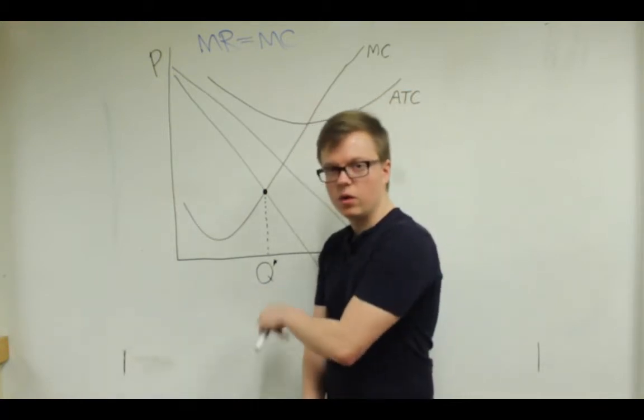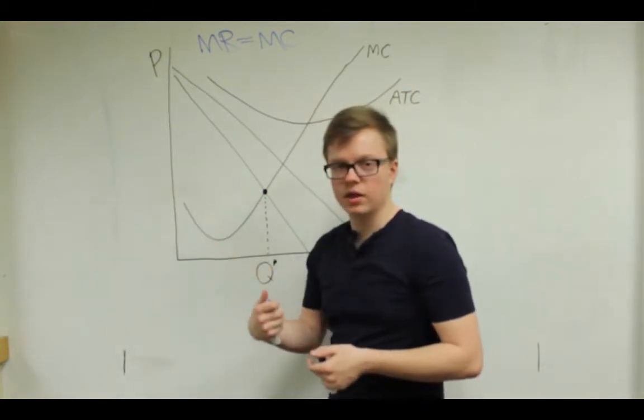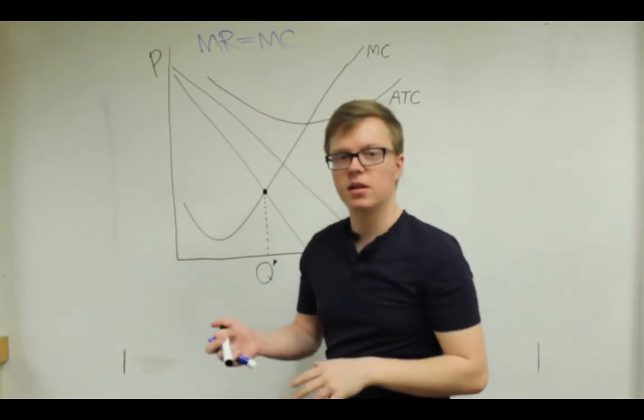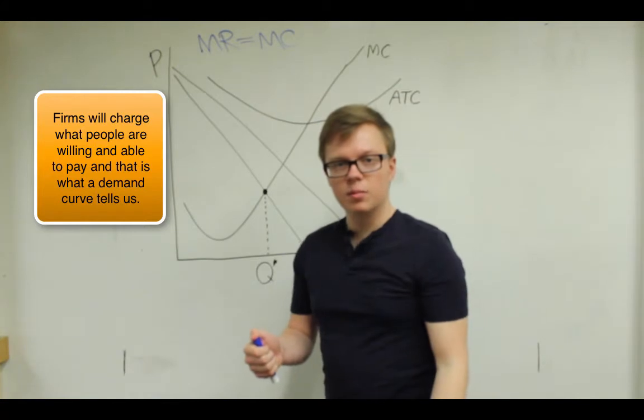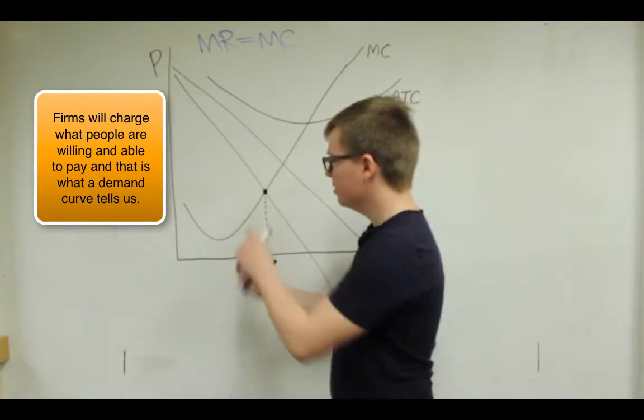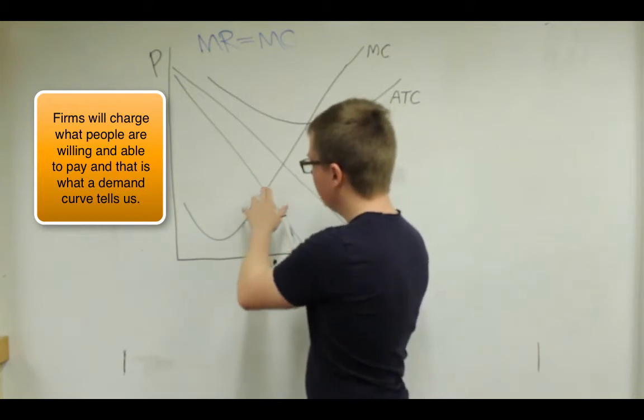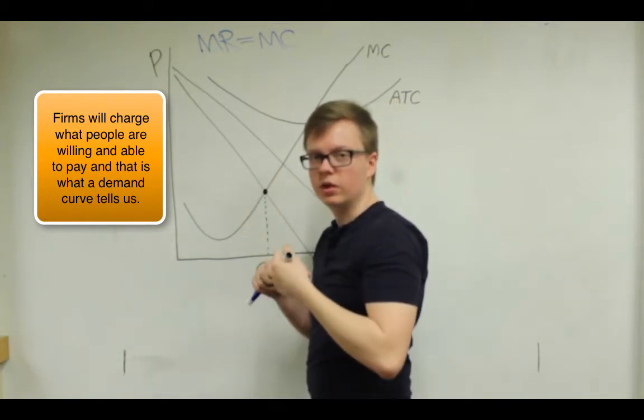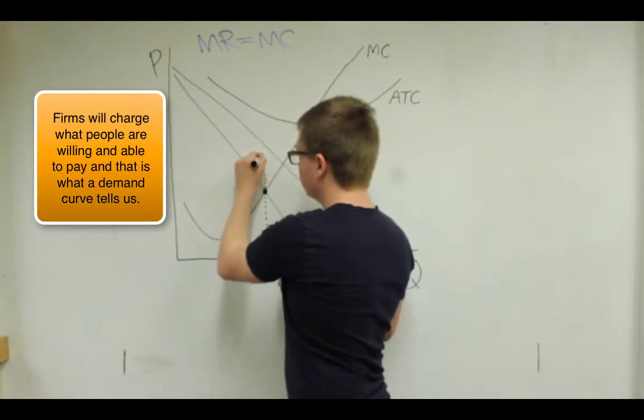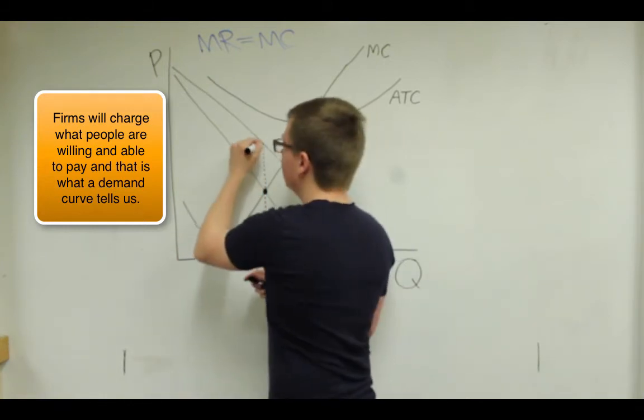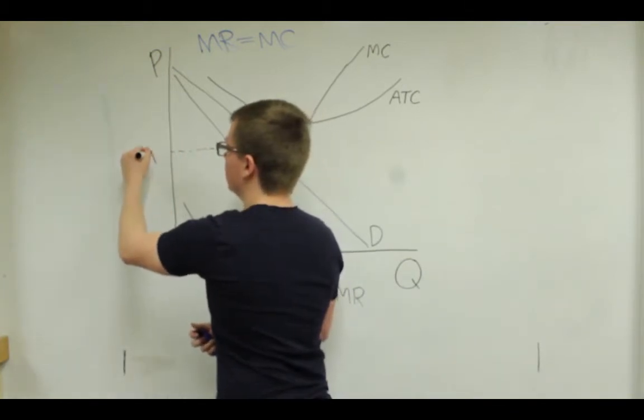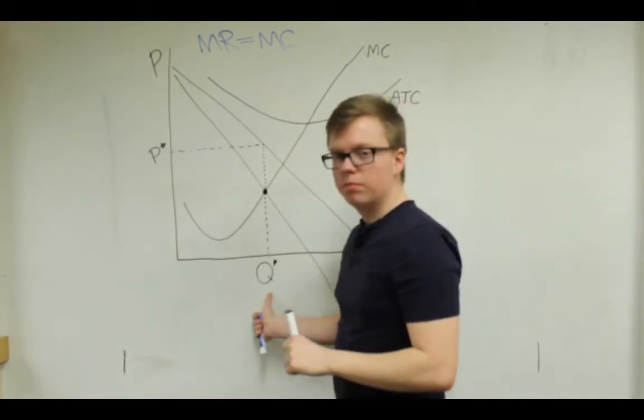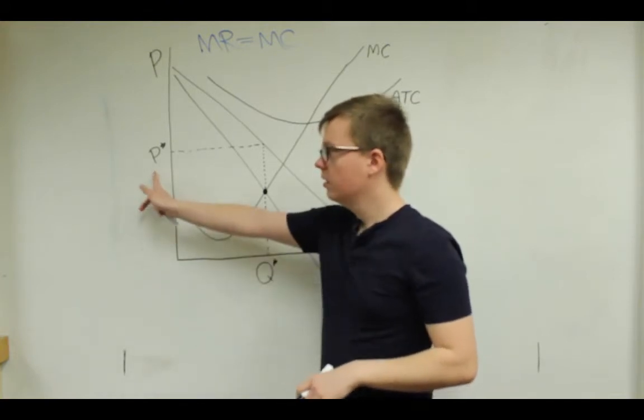But then, so we have our quantity. You might ask yourself, well, what price are they going to charge? And you might just want to go across from this dot and trace it over the price axis. But when a firm is a monopoly or in monopolistic competition, because of this downward sloping demand curve, they can raise the price. So the demand curve tells you what consumers are willing to pay for a certain quantity. So this firm could actually go all the way up to the demand curve. And that is the price they're going to charge. So now we have our profit-maximizing or loss-minimizing quantity and price.